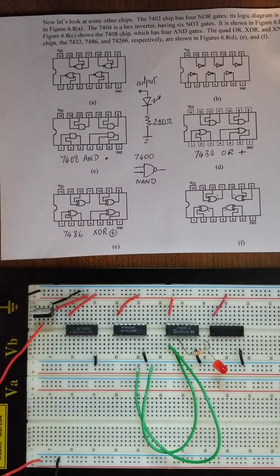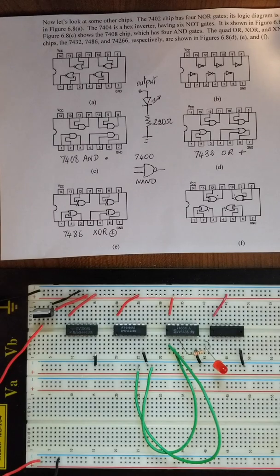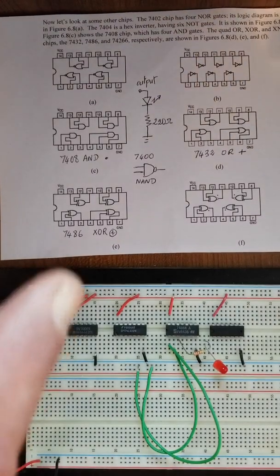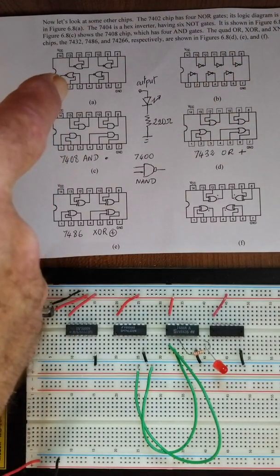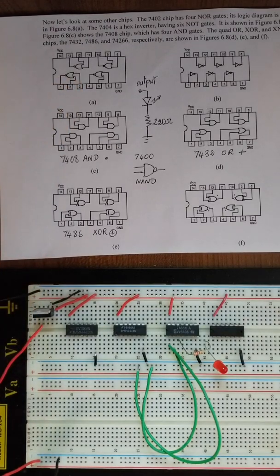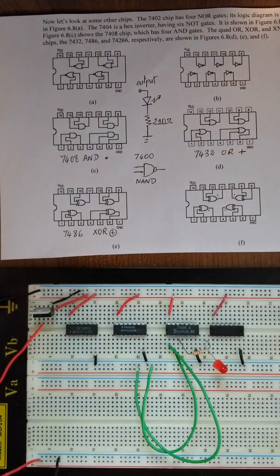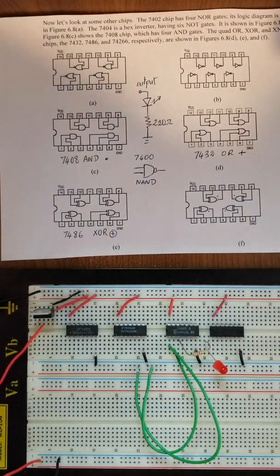I selected the 7400 NAND as the unknown chip because it has the same pin layout as the other three: pin 1 and 2 are inputs and pin 3 is the output. This is not the same for all gates — for example, the NOR gate has pins 2 and 3 as inputs and pin 1 as the output. To keep the pin layout consistent with the other three chips, I chose the NAND gate.